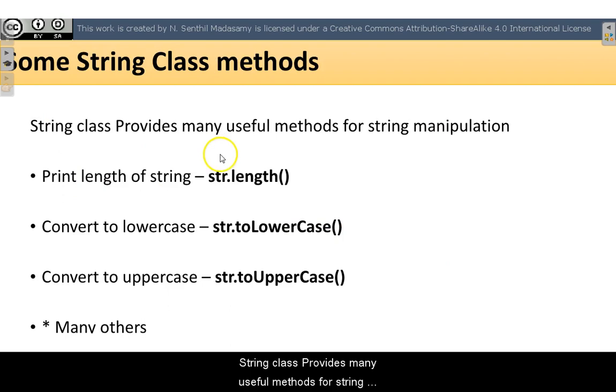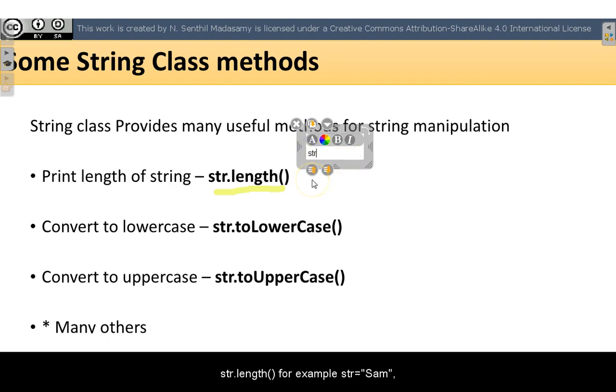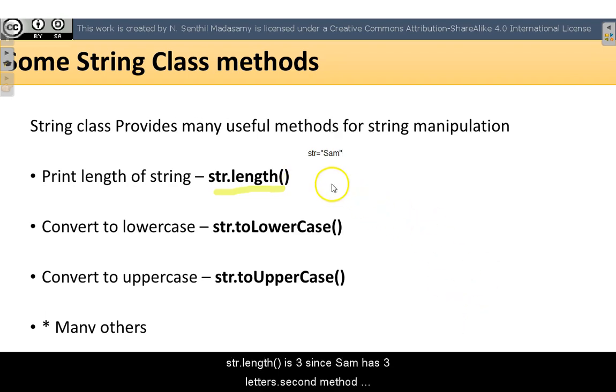String class provides many useful methods for string manipulation. First method is print length of string: str.length. For example, str equal to Sam. S is cap, am is lowercase letters. Str.length is 3, since Sam has three letters.